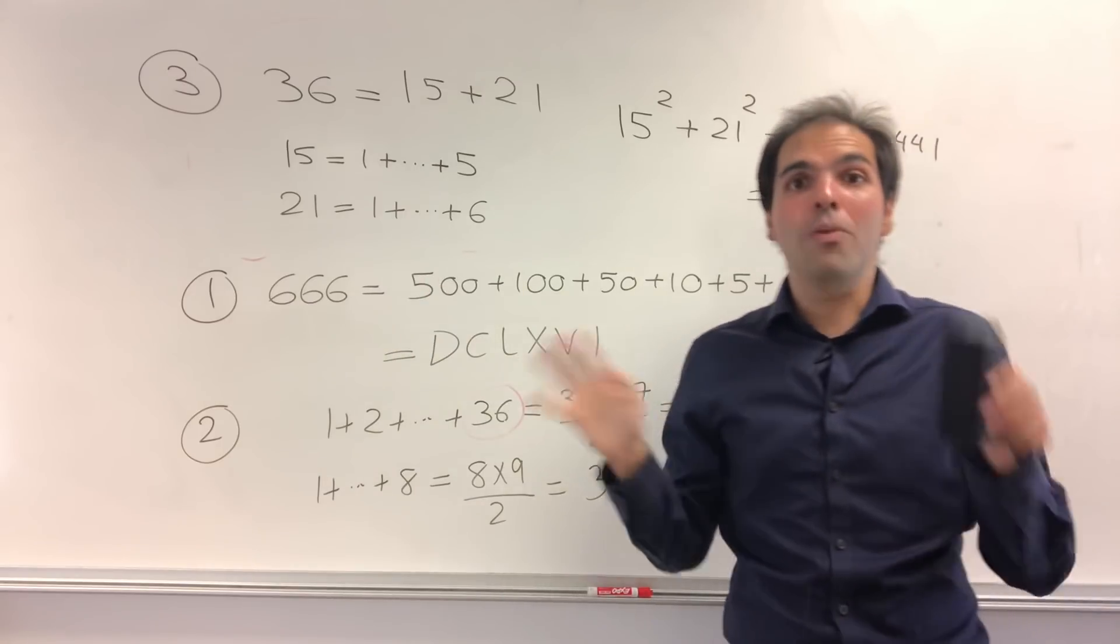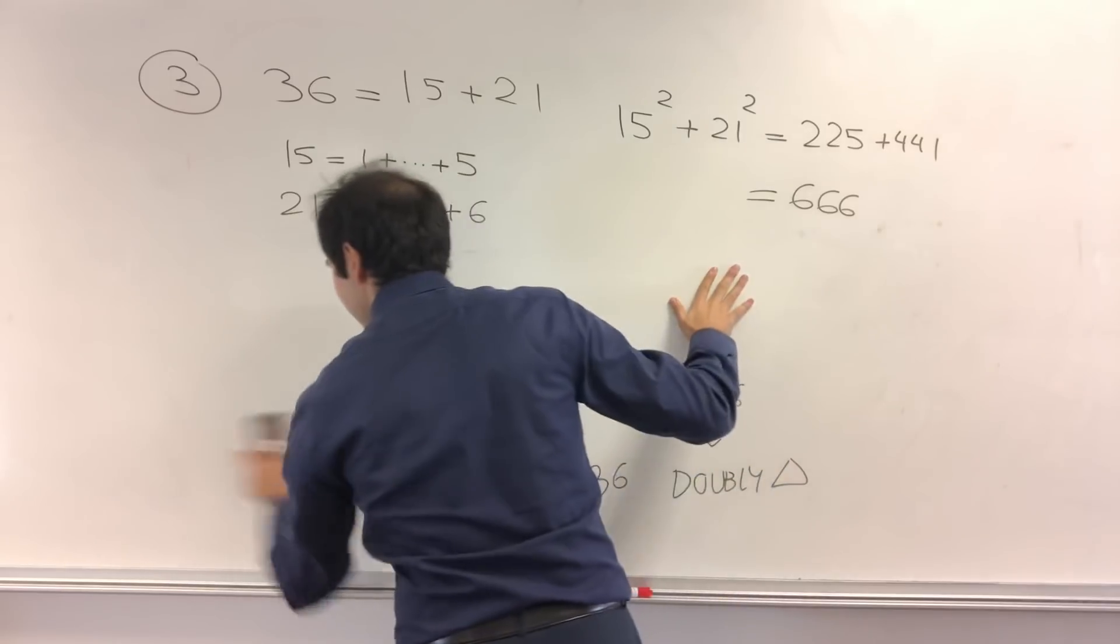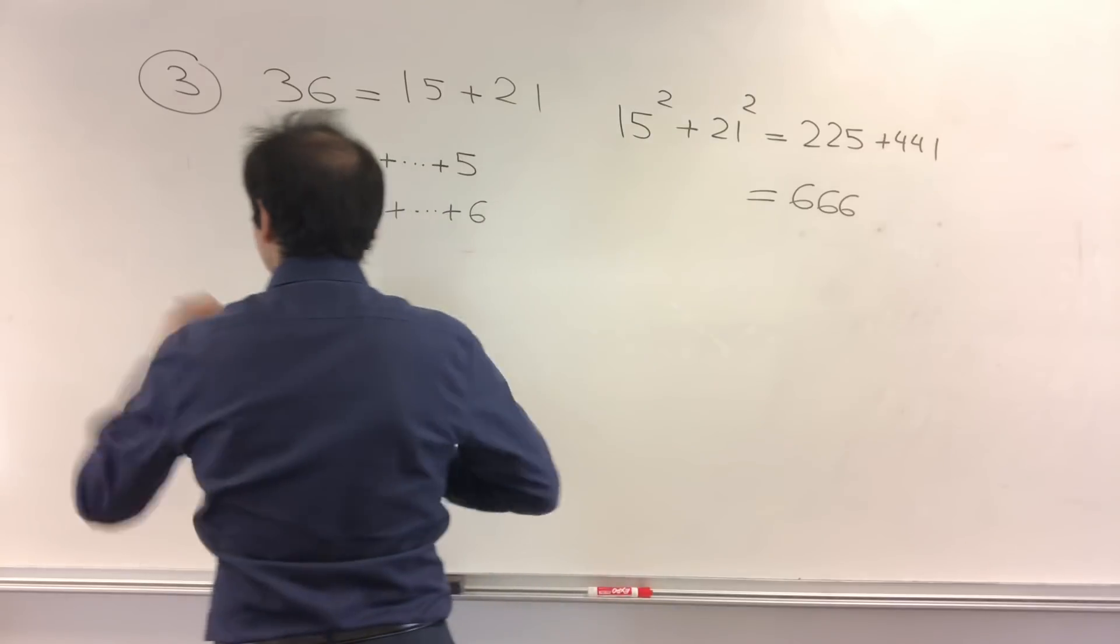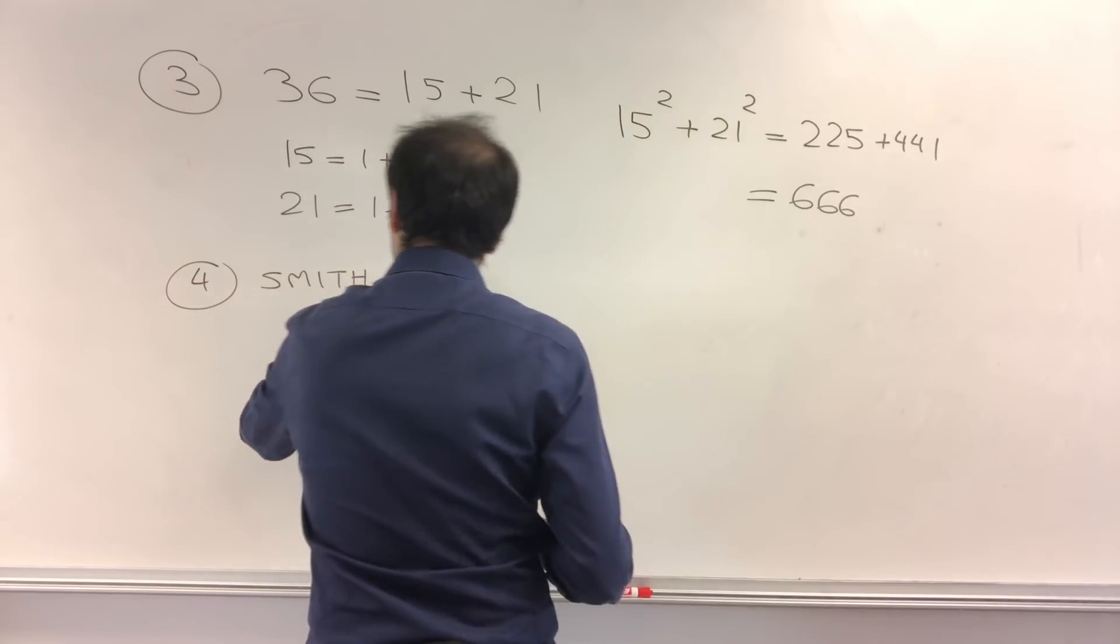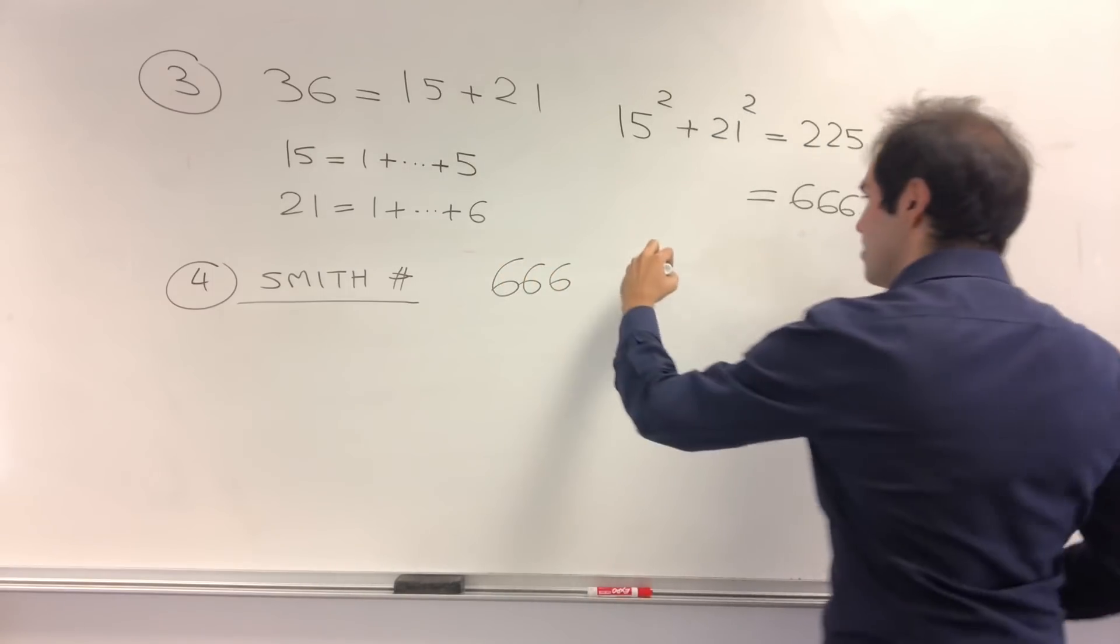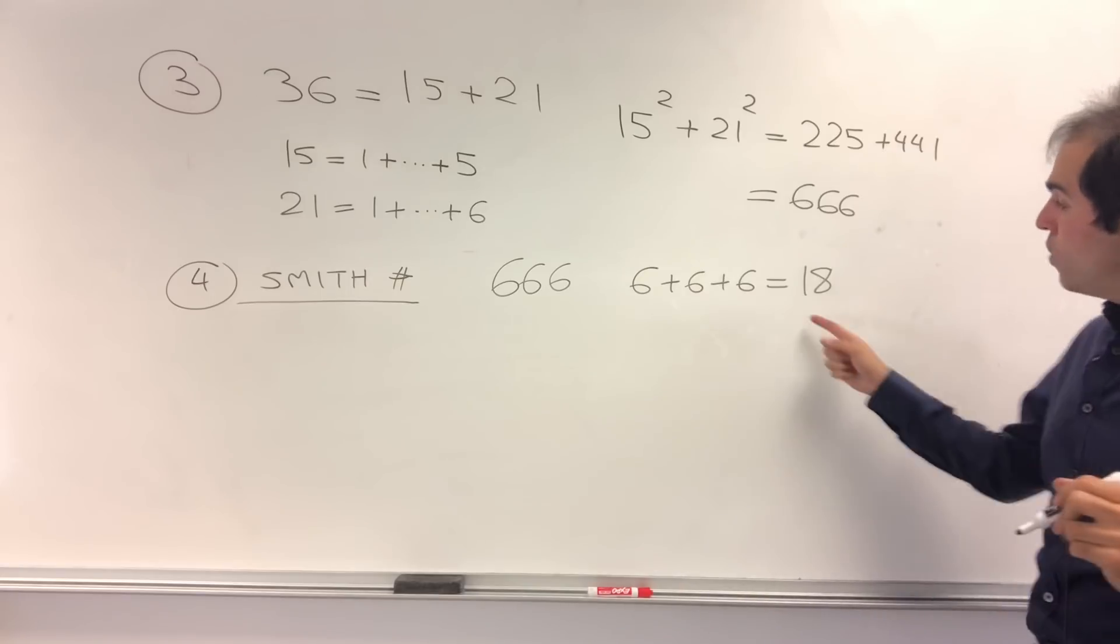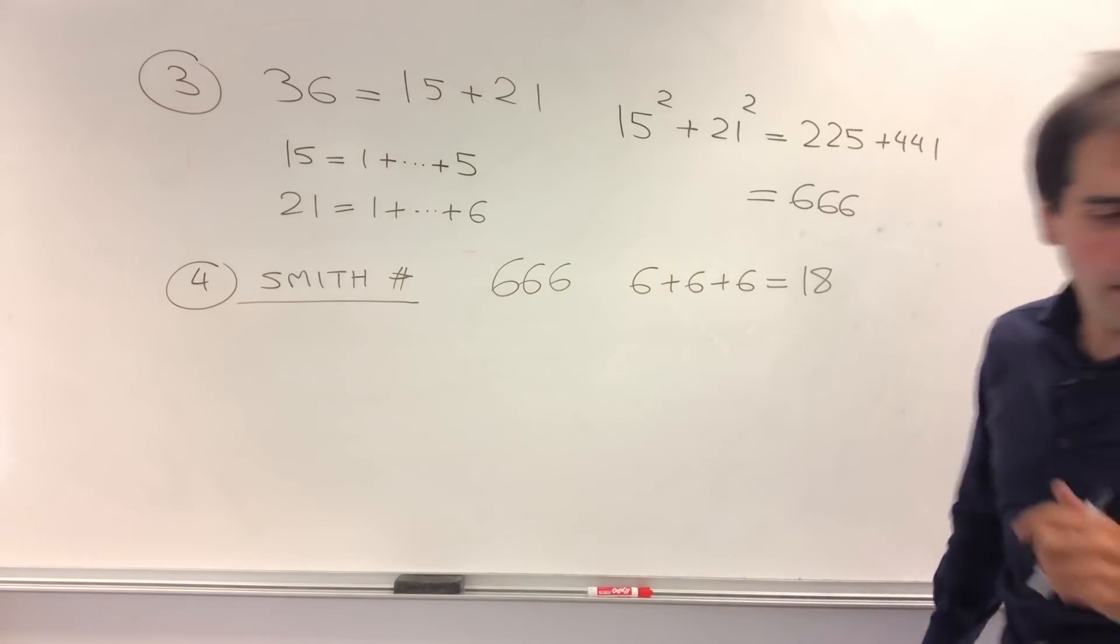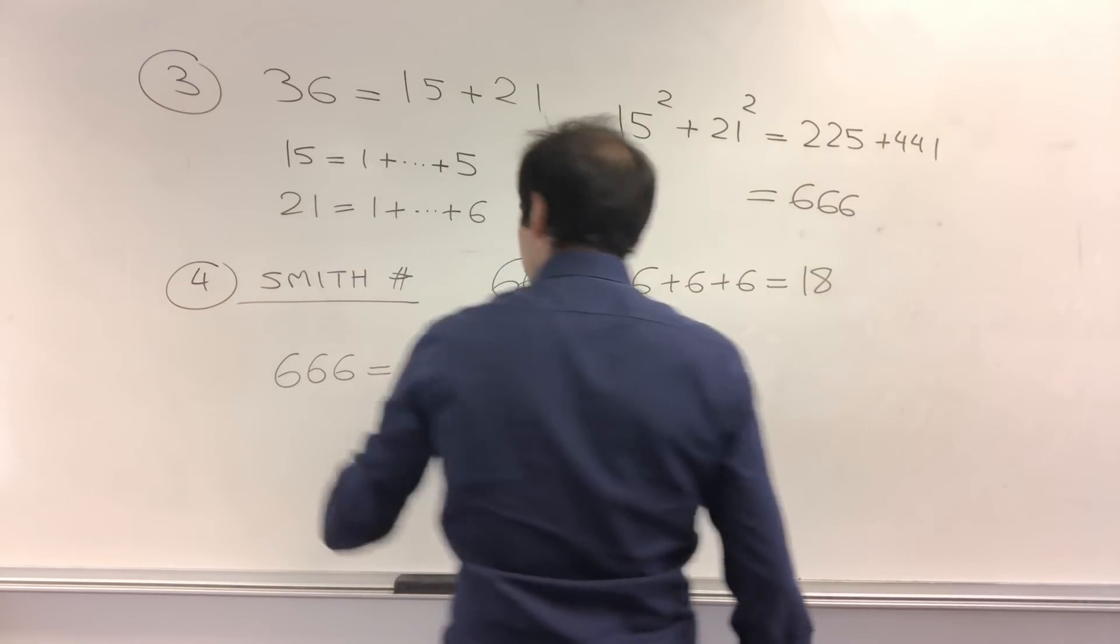Okay. Not only that, so let's now talk about prime factors. And turns out also 666 has some nice properties with prime factors, because it is what's called a Smith number. Because, well, take 666, and take the sum of it. So 6 plus 6 plus 6, that is 18.